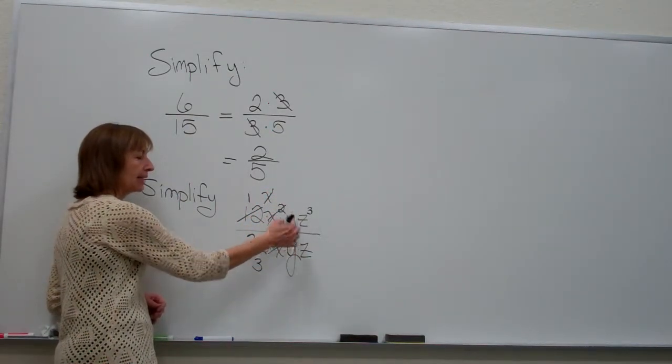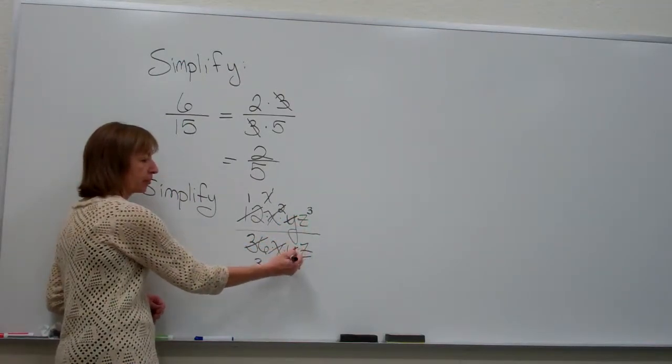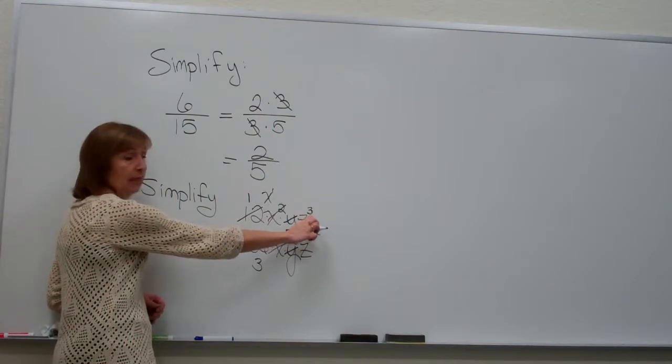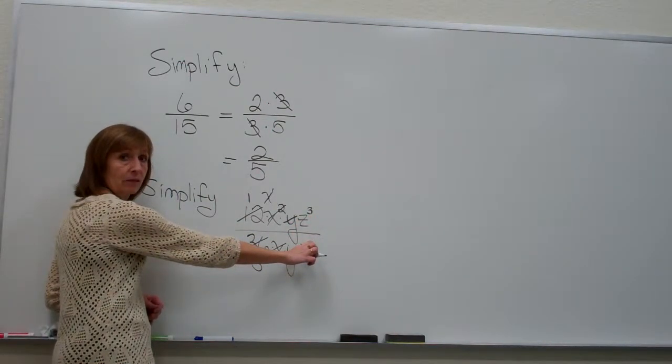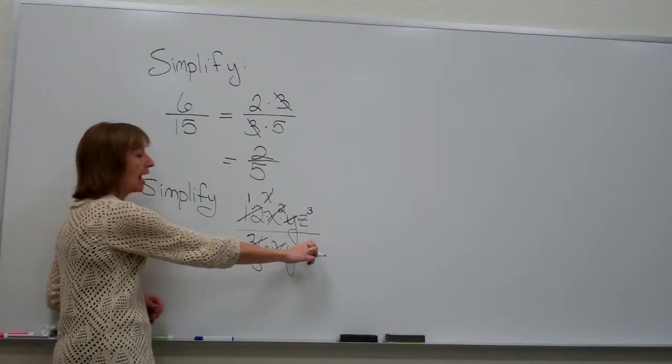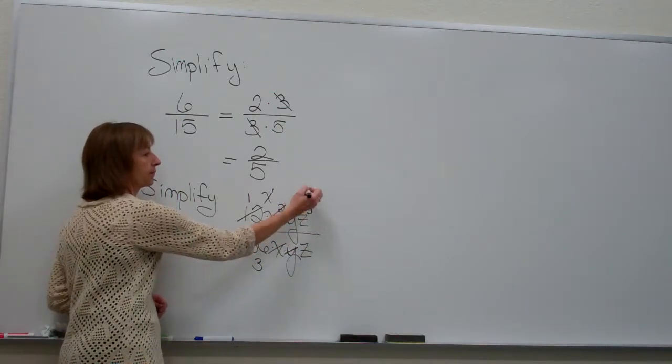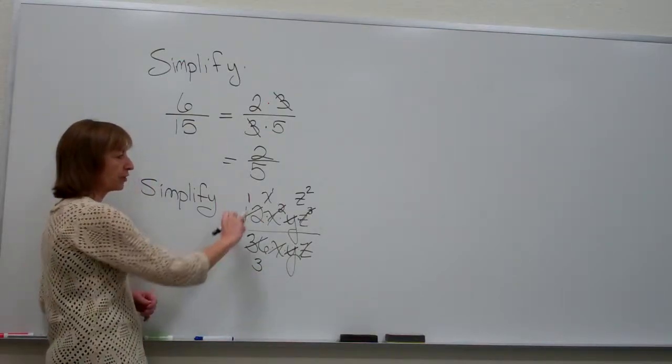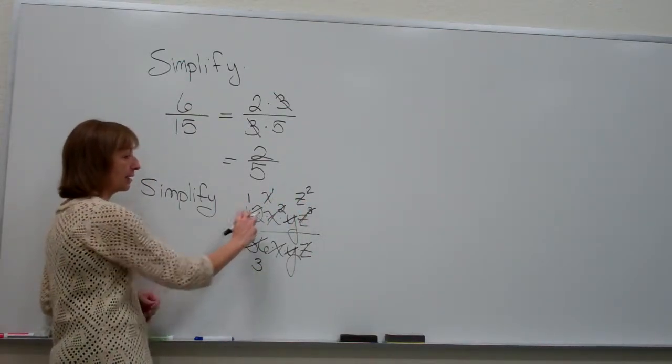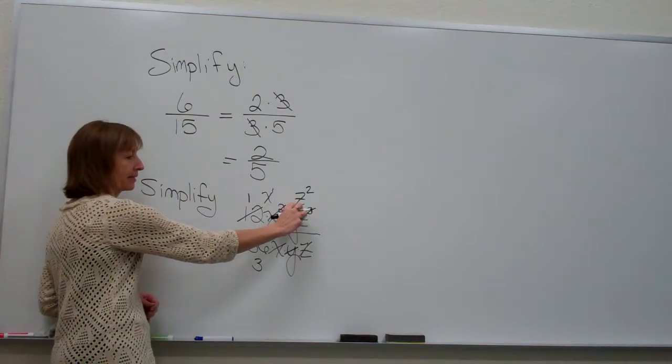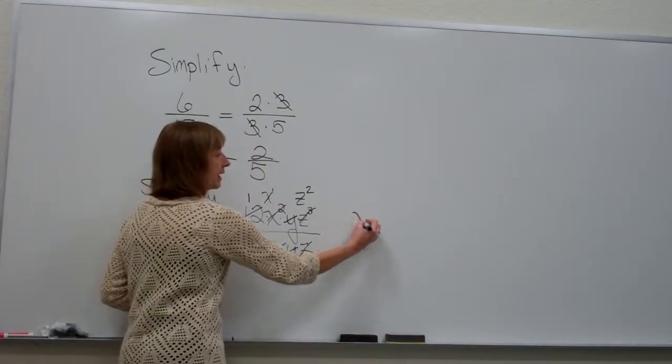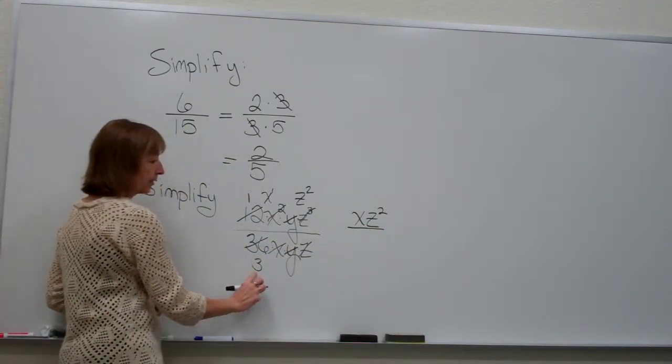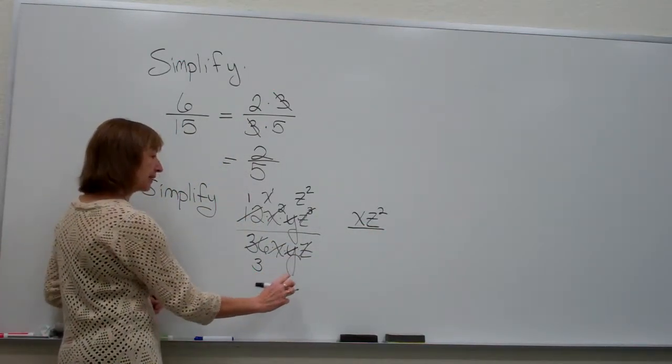For the y's, I can remove that common factor pair already. And for the z's, an exponent of 3 minus an exponent of 1 leaves me an exponent of 2 on my base of z in the numerator. So my simplified expression would be in my numerator, 1 times x times z² is xz² over 3 in my denominator.